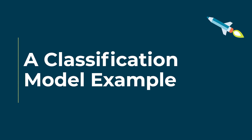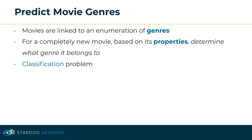In our movies dataset, movies are linked to an enumeration of movie genres such as drama, comedy, etc. Our first machine learning example problem is about predicting what genre a completely new movie belongs to, based on its properties, which is a classification problem as we need to identify the kind of genre category the new movie fits into.